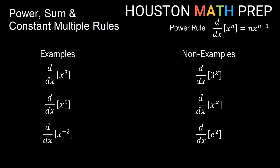Make sure that when we're talking about the power rule, we have a variable to a constant. Examples: derivative of x cubed, x to the fifth, x to the negative two — all variable to a number. Non-examples: three to the x is an exponential (number to a variable), x to the x is variable to a variable, and e squared is just a constant — its derivative is zero.